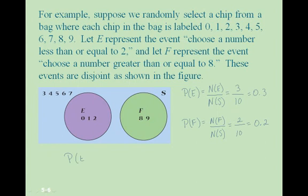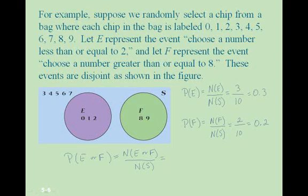If we want the probability of either event E or event F occurring — choosing a number less than or equal to 2, or greater than or equal to 8 — that equals the number of outcomes in E or F divided by the total sample space. E had 3 and F had 2, so E or F has 5 out of 10, giving 0.5. This is equivalent to adding P(E) + P(F) = 0.3 + 0.2 = 0.5.